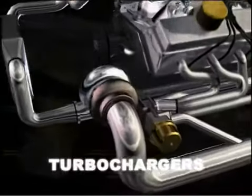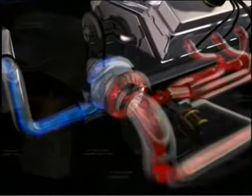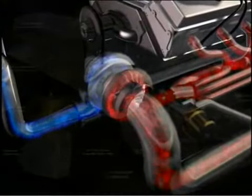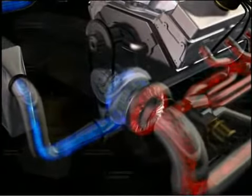Generally, the turbo is mounted near the exhaust manifold. Exhaust gases enter the turbine side and strike the fins of the turbine wheel, causing it to rotate, which in turn rotates the compressor wheel on the other side.